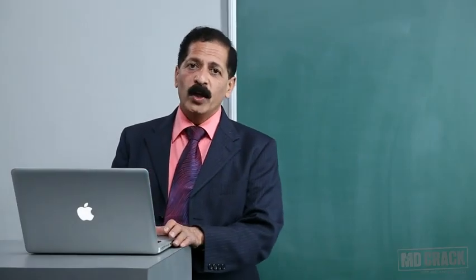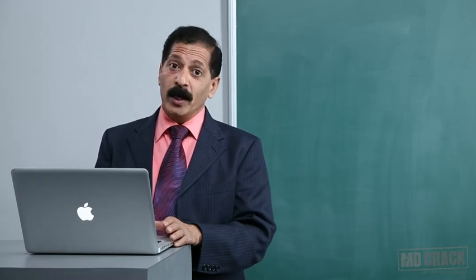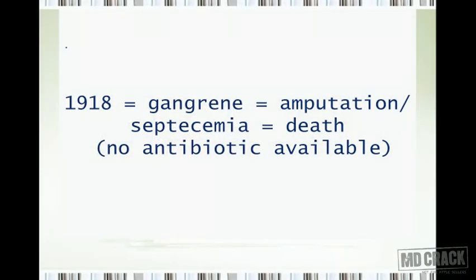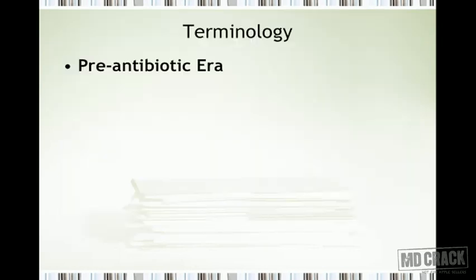In this module we start discussion of chemotherapy, beginning with an introduction and penicillins. Looking back to 1918 during World War One — at that time, if you got a gunshot wound it used to mean gangrene, because there was no antibiotic or antimicrobial agent available. Infection meant gangrene, infection meant amputation, infection meant septicemia and death. This was called the pre-antibiotic era.